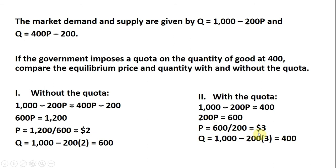we see that the price is a little bit higher. The equilibrium price is now $3, and that should be no surprise — when you restrict output, price goes up. To make sure that consumers will buy 400 units at a price of $3, we put $3 back into the demand equation, and we find that indeed consumers will buy 400 units at a price of $3.